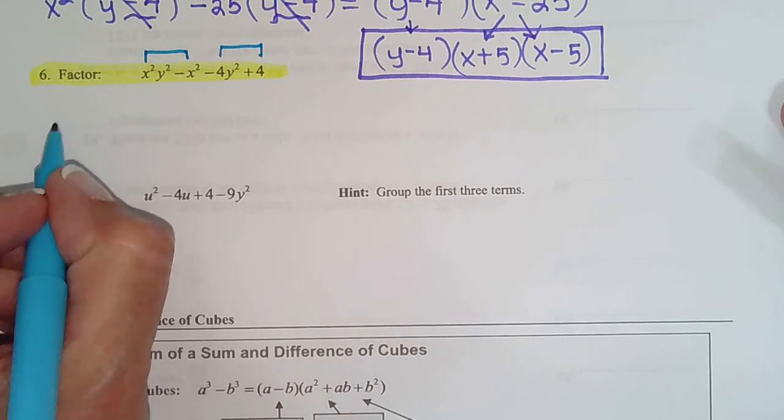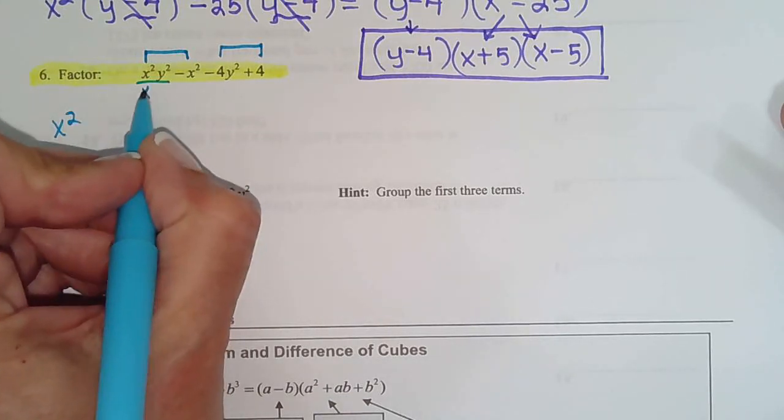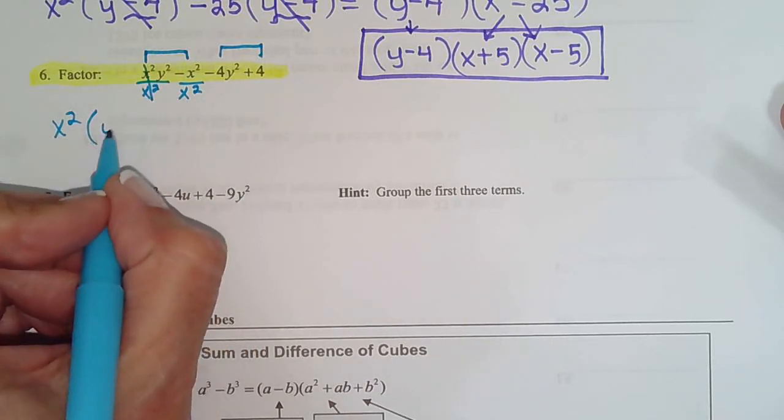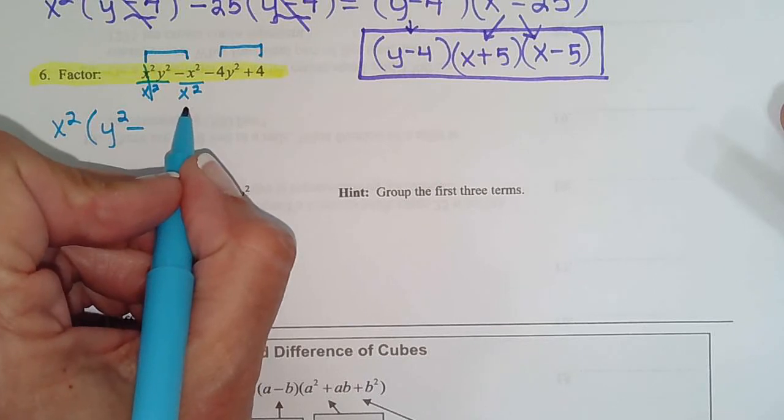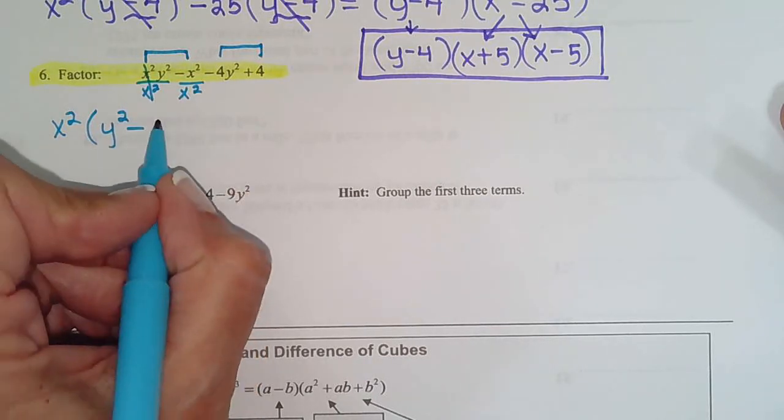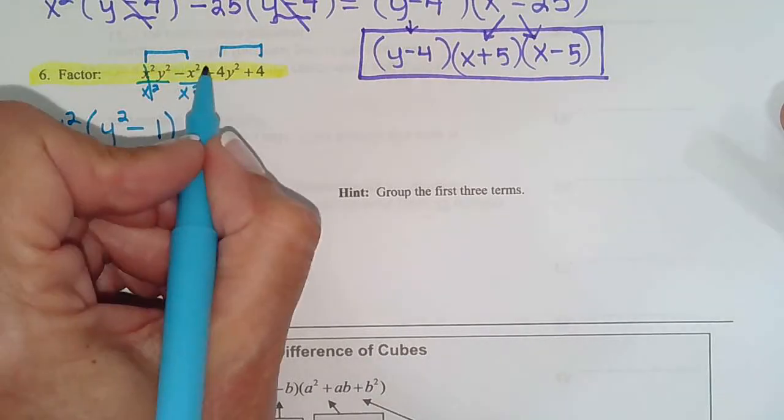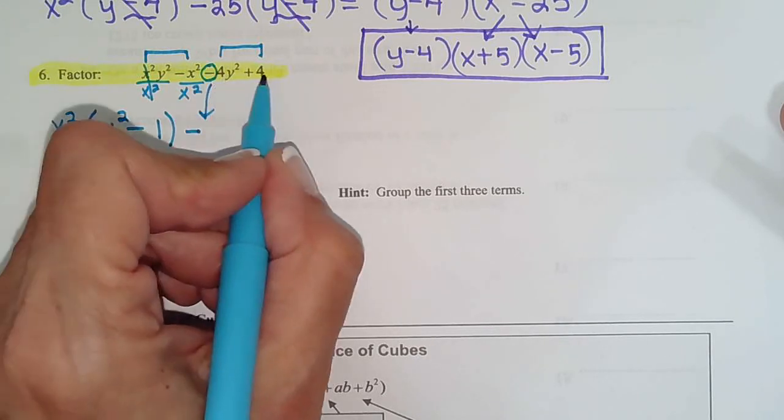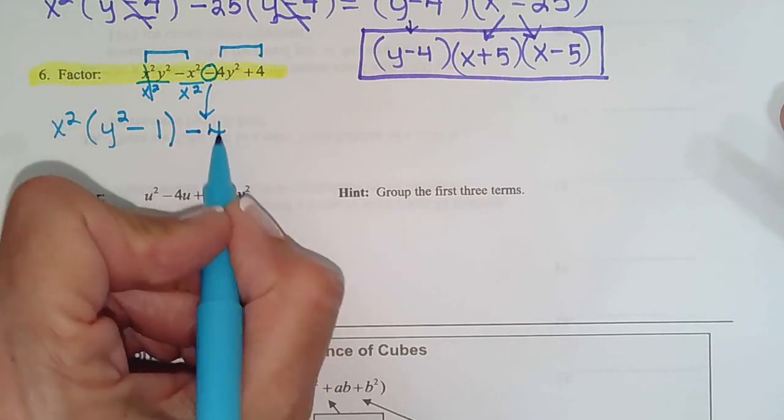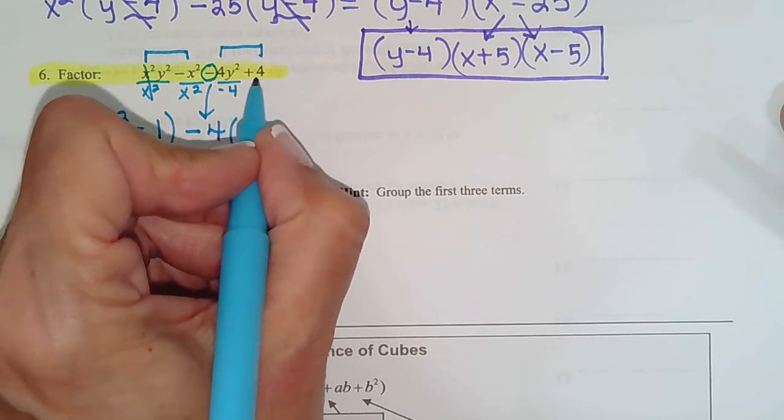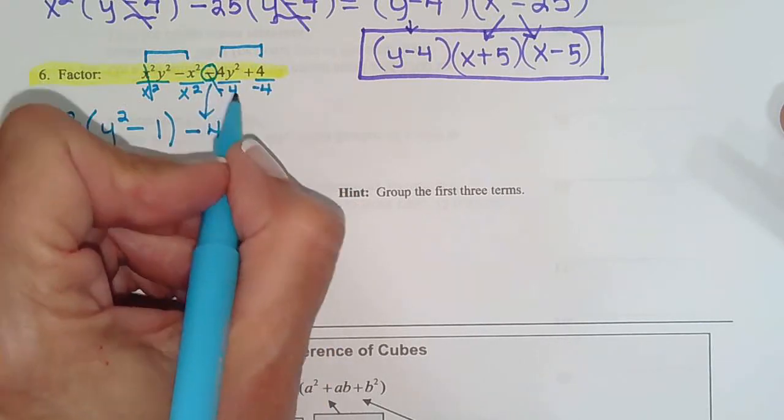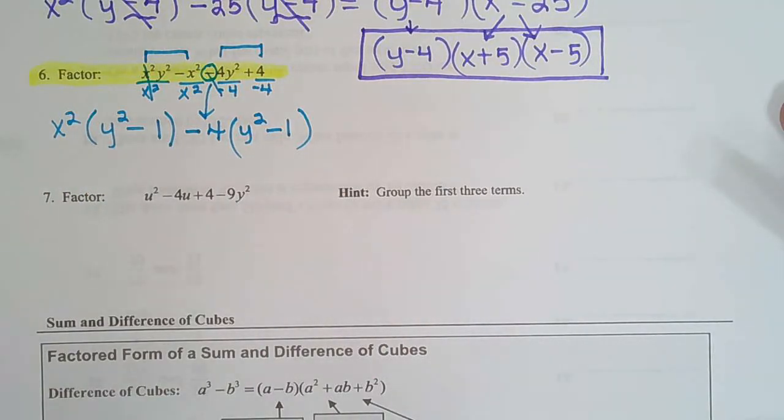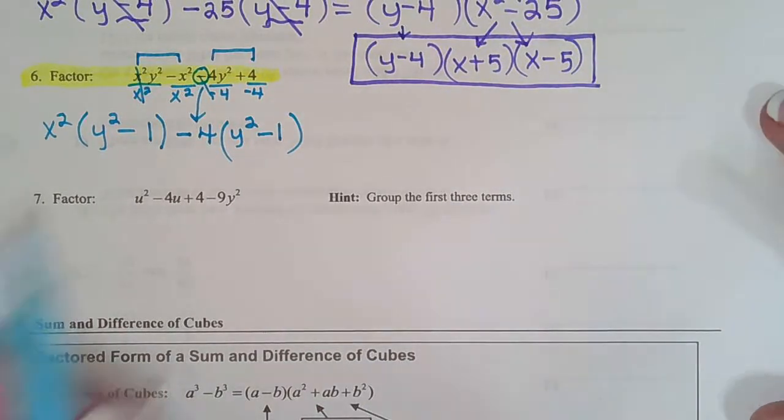So the GCF here is x squared again. So I divide each one by x squared and I get y squared minus anything divided by itself is 1. And there's that tricky negative again. So that means my GCF is going to be negative. And it looks like 4 is common to both. So I divide this term by negative 4, this term by negative 4. So I get positive 1, y squared, and then minus 1. Parentheses match. That's our hint. We're on the right track. Yay!